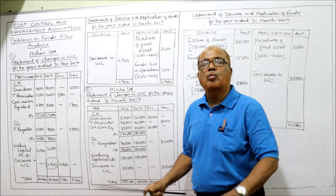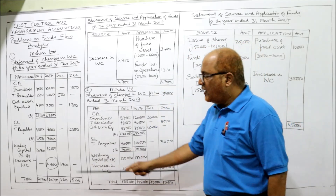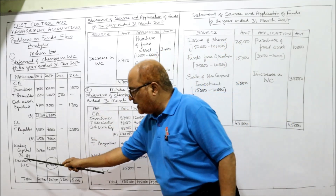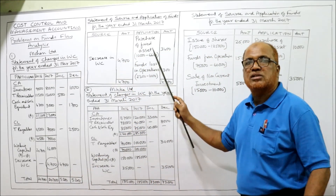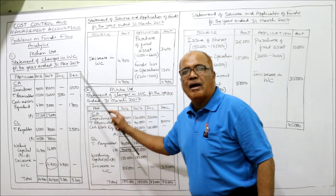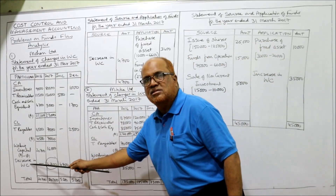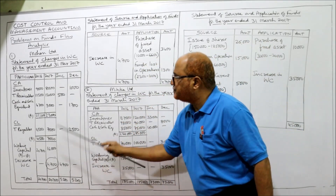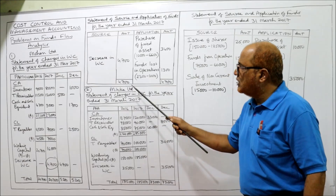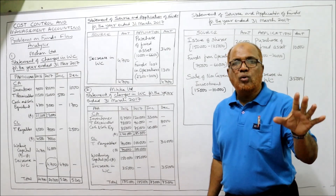Current assets we are not concerned with here — already taken in working capital. Last point: if you get decrease in working capital, take it on the source side. If you get increase in working capital, take it on the application side. Here we got decrease in working capital — 4,700 on source side. If you do not commit any mistake, the total of source and application will be equal. We got 4,700 each — done correctly. This is the first problem on funds flow statement.